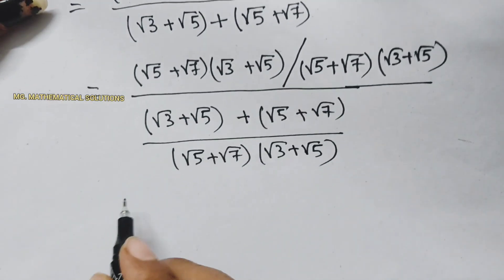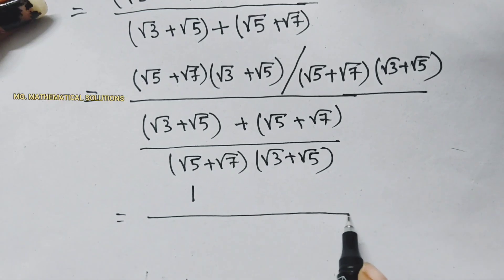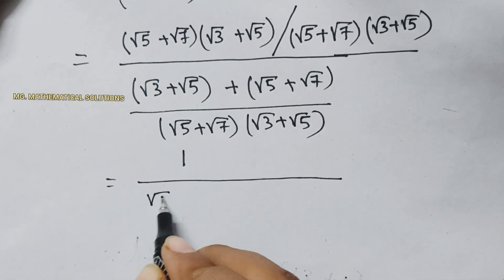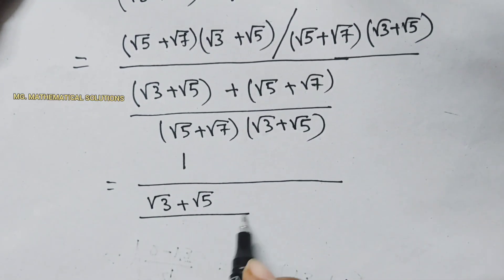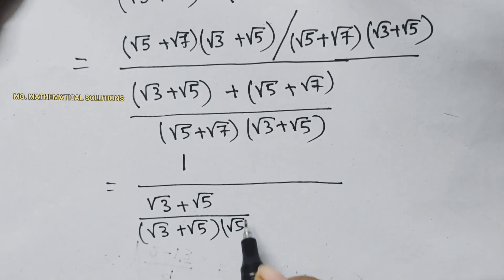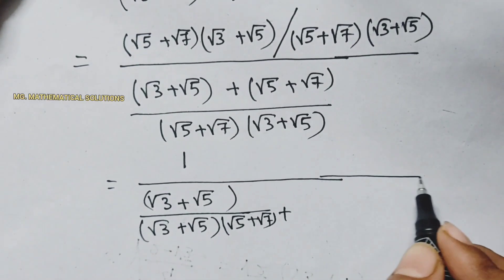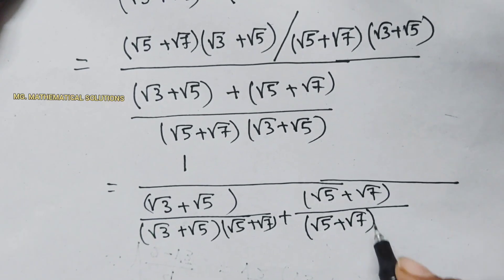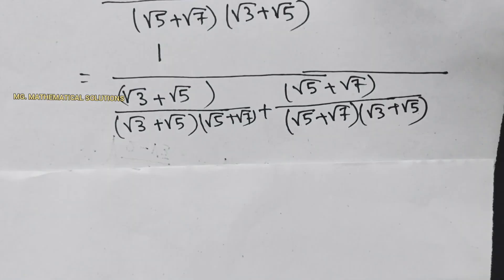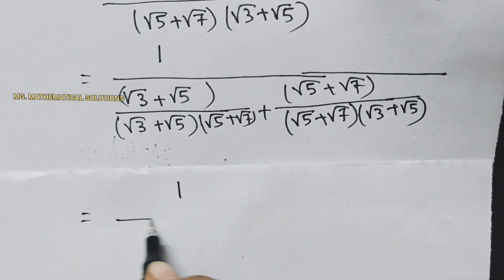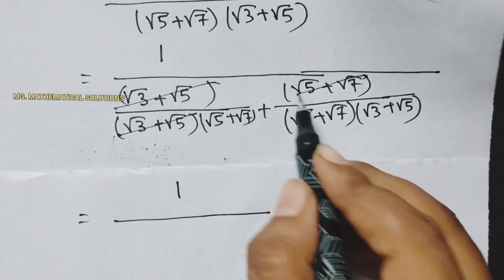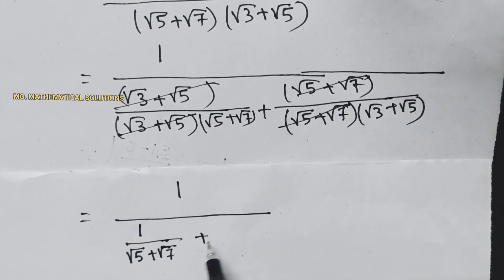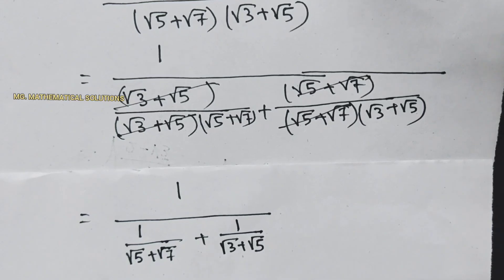This term and this term are cancelled. So we have 1 divided by: this term divided by this term, and this term divided by this term. Root 3 plus root 5 over root 3 plus root 5 cancels to give root 5 plus root 7, and root 5 plus root 7 over root 5 plus root 7 cancels. So we get 1 over root 5 plus root 7, plus 1 over root 3 plus root 5.